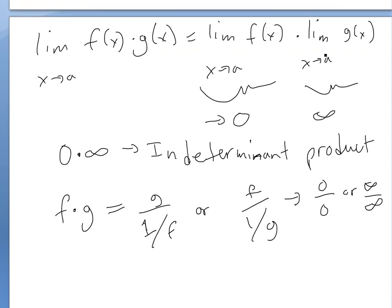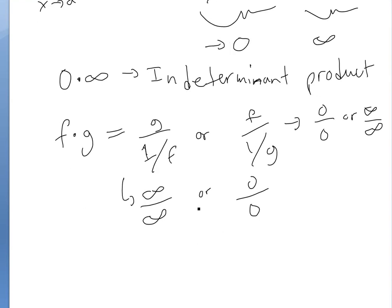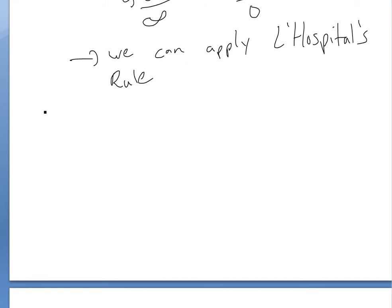For example, with g divided by (1/f): g approaches infinity and f approaches 0, so 1/f approaches infinity, giving you infinity over infinity. Or with f divided by (1/g): f approaches 0 and 1/g approaches 0 as well, giving you 0 over 0. From either of these rearranged forms, we can then apply L'Hôpital's Rule.